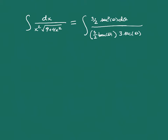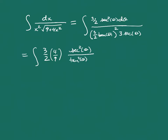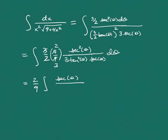Now we simplify the integral. We have 3/2 on top and 9/4 (i.e., 4/9 inverted) on the bottom, with secant squared on top, tangent squared on the bottom, and another 3 secant of theta in the denominator. The 3s cancel, the 2s cancel, giving us 2/9 times the integral of secant of theta over tangent squared of theta d theta.